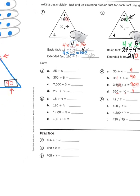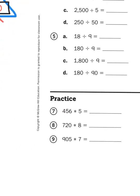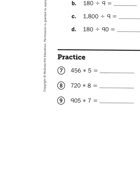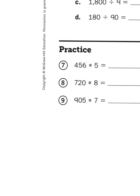Let's take a look at problem number 9, shall we? 905 times 7. And I'm going to use partial products as my strategy this time. I'm going to rewrite that problem vertically.